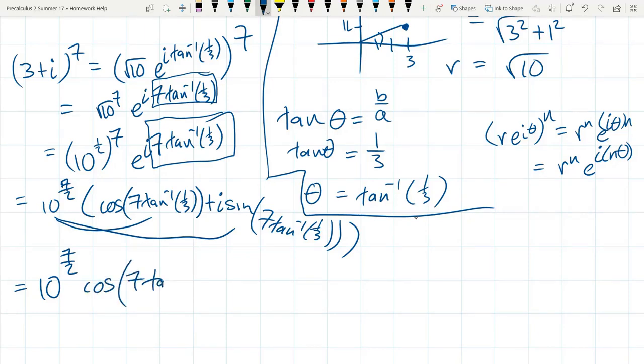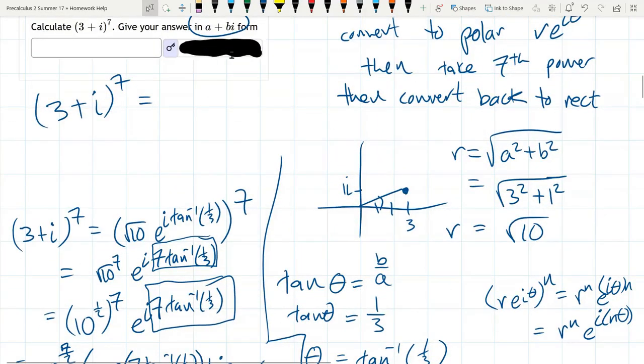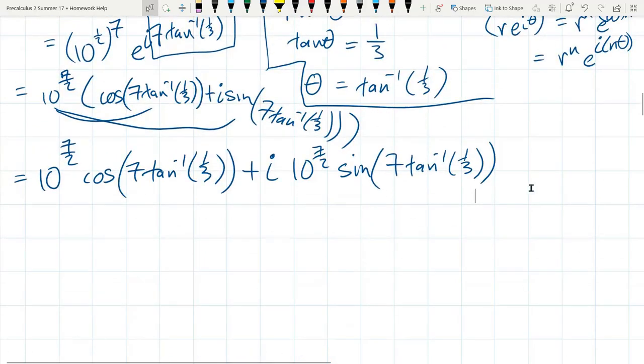I'm distributing this to each of these. So we have 10 to the 7 halves cosine 7 tan inverse 1 third, plus i, 10 to the 7 halves, sine of 7 tan inverse 1 third. There we go. This will all turn into numbers, so I'm not going to show you the actual answer because it's going to be in decimal form. But you should be able to put these into a calculator carefully and get values out for those. And it doesn't matter if you're in radian degree mode because the tan inverse will give you radians or degrees. And then if you're in the same mode, the cosine will use that mode. So you should be okay either way.